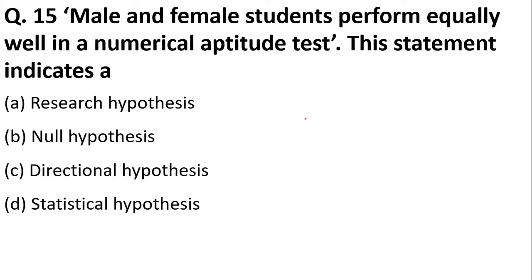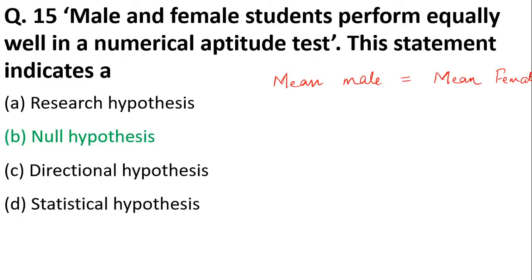Male and female students perform equally well in a numerical ability aptitude test — this statement indicates: a research hypothesis, null hypothesis, directional hypothesis, or statistical hypothesis? The correct answer is option B — null hypothesis — because the mean score of male students equals the mean score of female students, which is a null hypothesis.